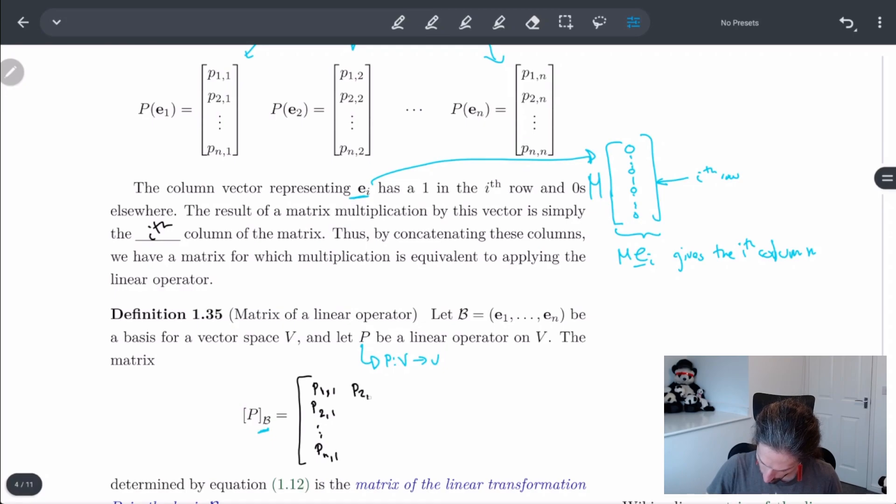So basically, we just take these column vectors from above and we place them into a matrix: P_11, P_21, all the way to P_N1; P_12, P_22, P_N2; all the way to P_1N, P_2N, P_NN.